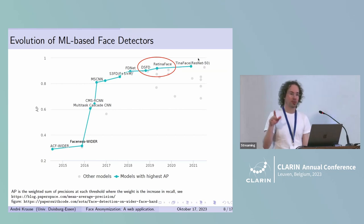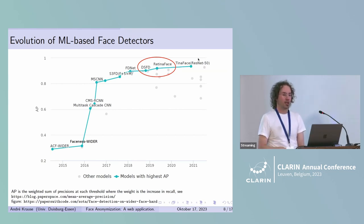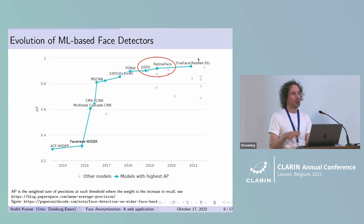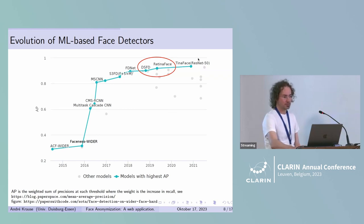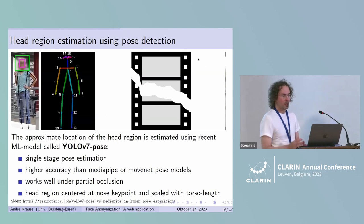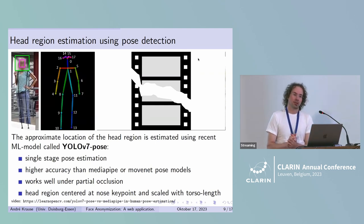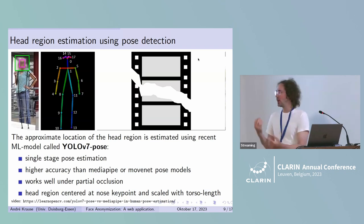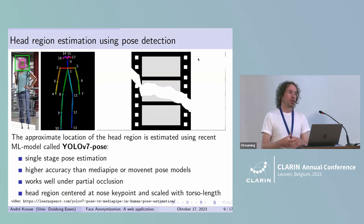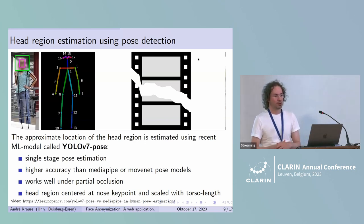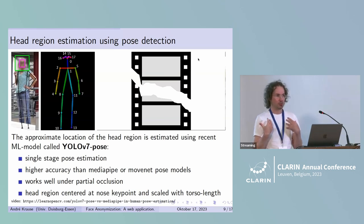As you can see, face detectors are approaching a kind of saturation, and the two face detectors we evaluated — DSFD and RetinaFace — are among the best ones, at least on that data set. For situations where a person is showing their back and the ear might still be visible, we fall back to pose detection and use it to estimate the head region. For that, we use a machine learning model called YOLO version 7 that is able to detect the human pose.